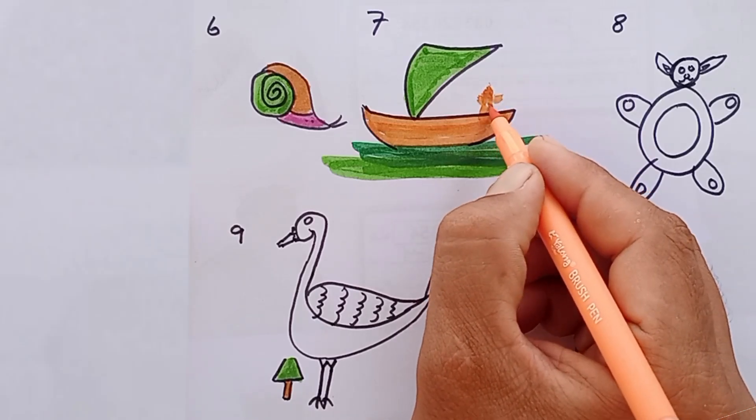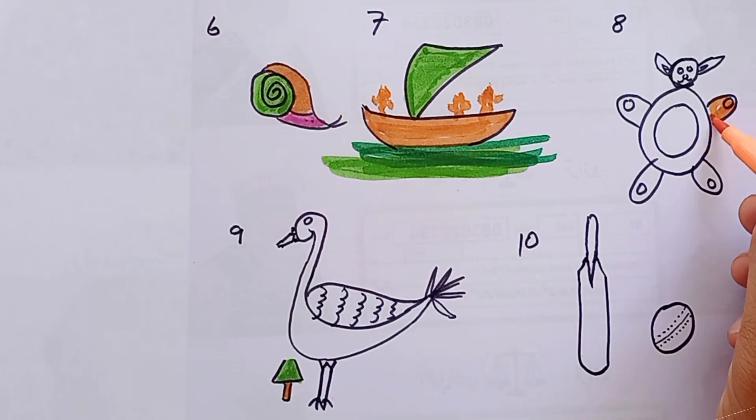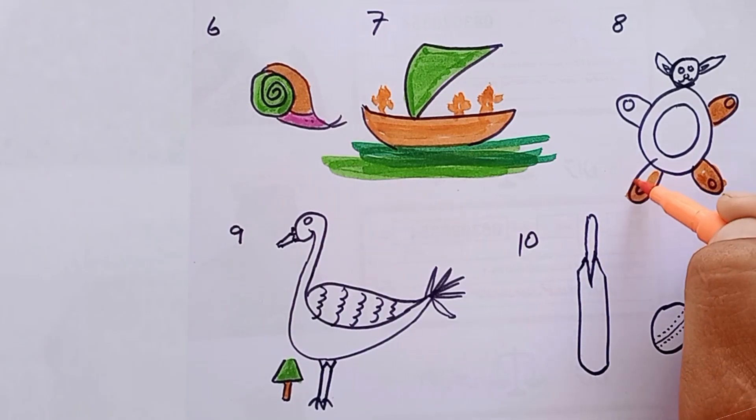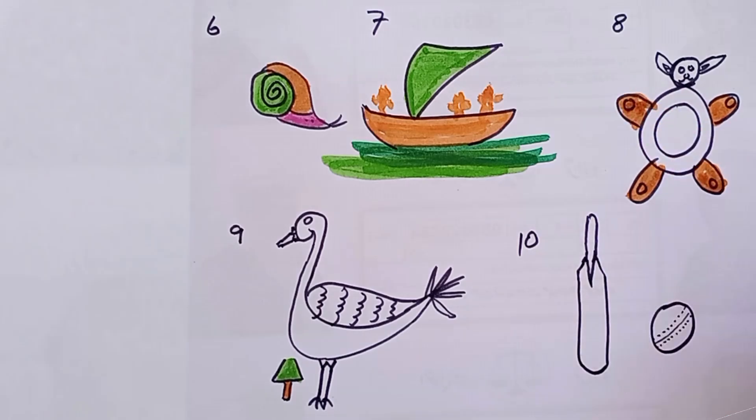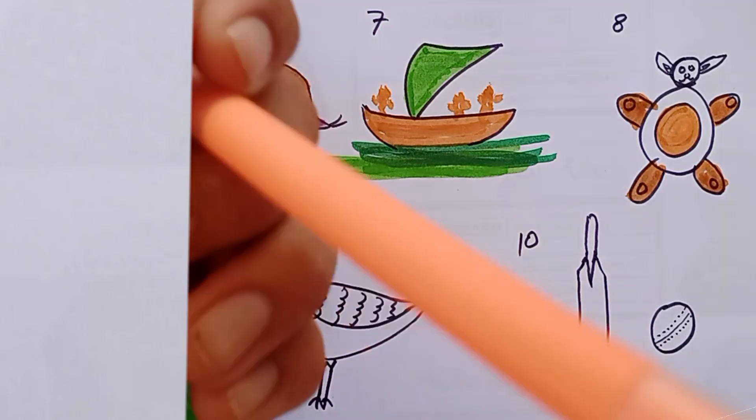They had a big feast. From then on, Quackers was known as the kindest duck in the pond. She continued to explore and find treasures, sharing them with her friends. They all lived happily ever after, thanks to Quackers' kind heart.